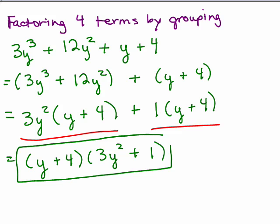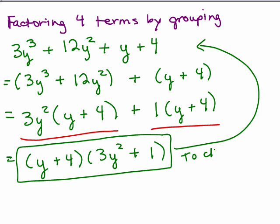Now the way to check is by doing the FOIL method or the BOX method — any method you want — multiply it back out and make sure that you get the original. So to check, multiply. Remember, factoring is sort of going the opposite direction.